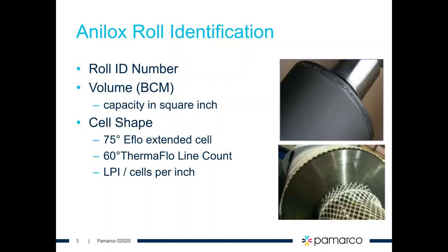We manufacture these rolls very specifically, starting with volume. Volume is the most critical component in the manufacturing of an anilox roll. Once we identify the volume we need — say, for example, 2.5 BCM for a wide web 150-line flexo job — we want to maintain that volume. We start there and then back into a calculation to determine what line screens on that anilox roll will provide the best volume. There are a lot of different types of engraving: 75-degree engraving, RE-flow extended cell technology, or a conventional 60-degree thermal flow engraving, all of which produce excellent results.